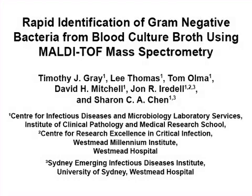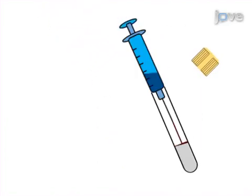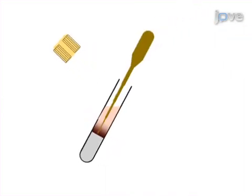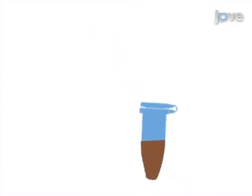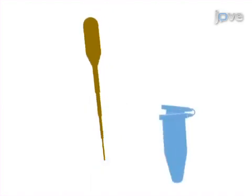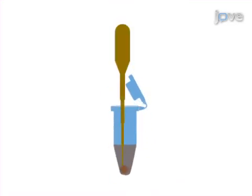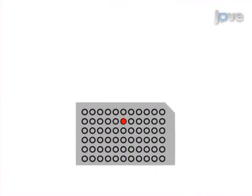The overall goal of this procedure is to identify gram-negative organisms directly from blood culture broth using MALDI-TOF technology. To do this, 5 milliliters of a positive blood culture broth is transferred into a serum-separating tube and centrifuged. Following the spin, the bacteria-containing fluid layer is transferred into a microcentrifuge tube and centrifuged at low speed. The supernatant is then transferred to a new microcentrifuge tube and centrifuged at high speed. The resulting pellet is re-suspended in formic acid and analyzed by MALDI-TOF to identify the bacteria species present.